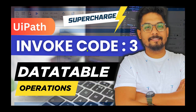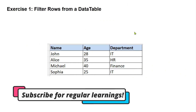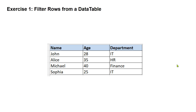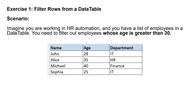In this video I am going to show you data table operations that you can do using invoke code. Spend some few minutes of your time to learn these techniques. The exercise is we have to filter rows from a data table. The scenario is: imagine you're working in HR automation and you have a list of employees in a data table. You need to filter out employees whose age is greater than 30.